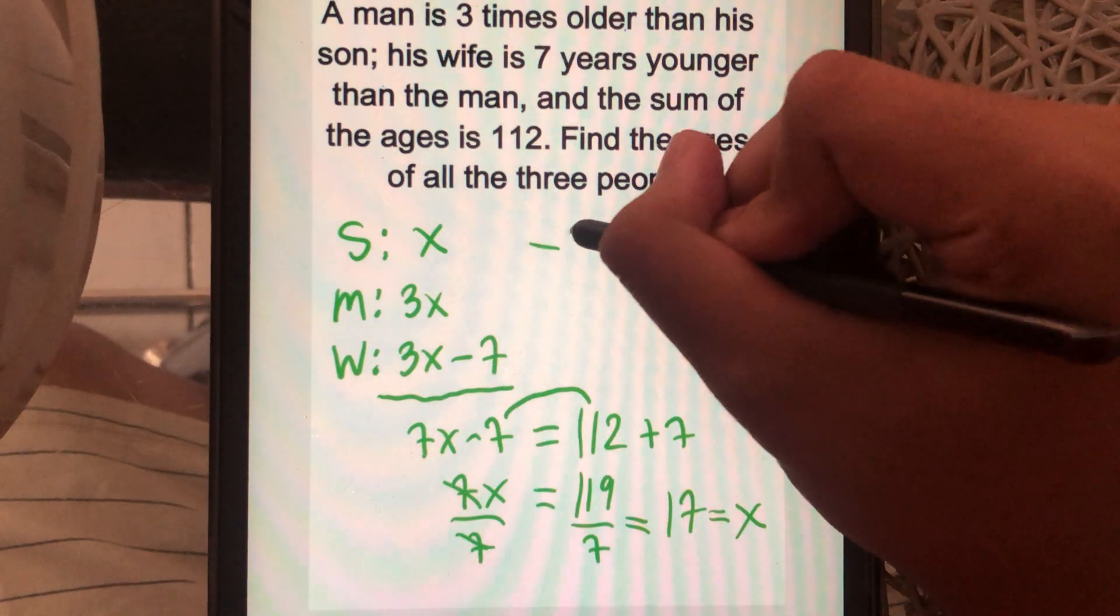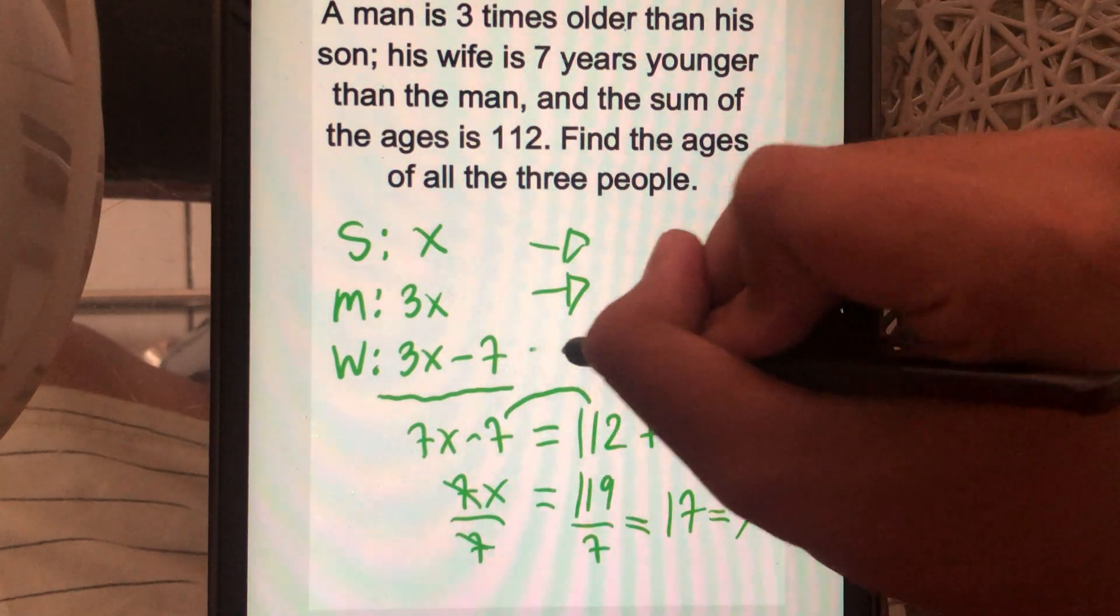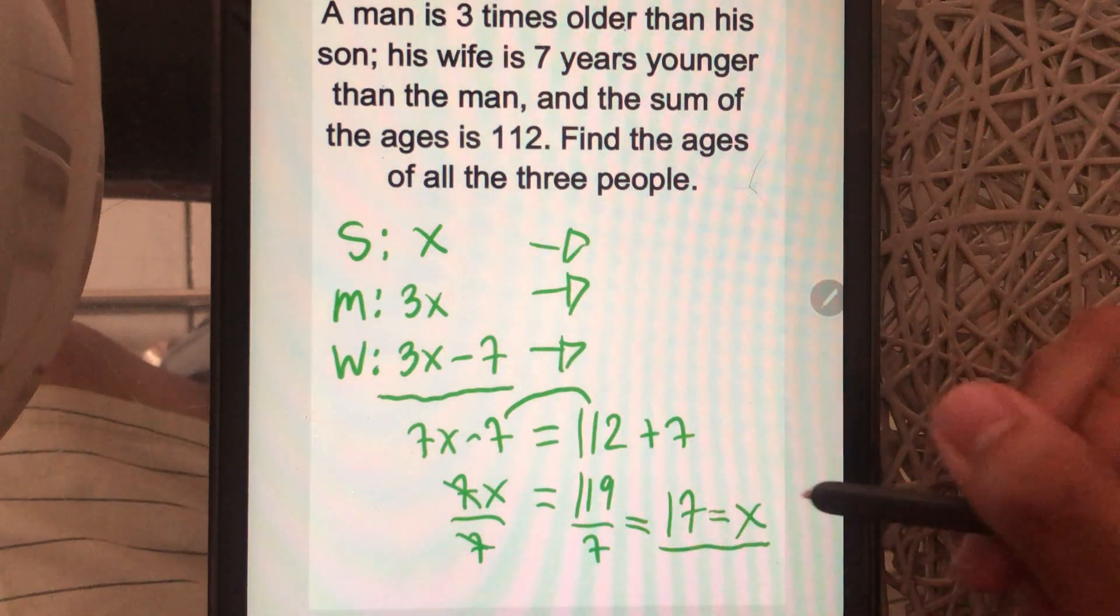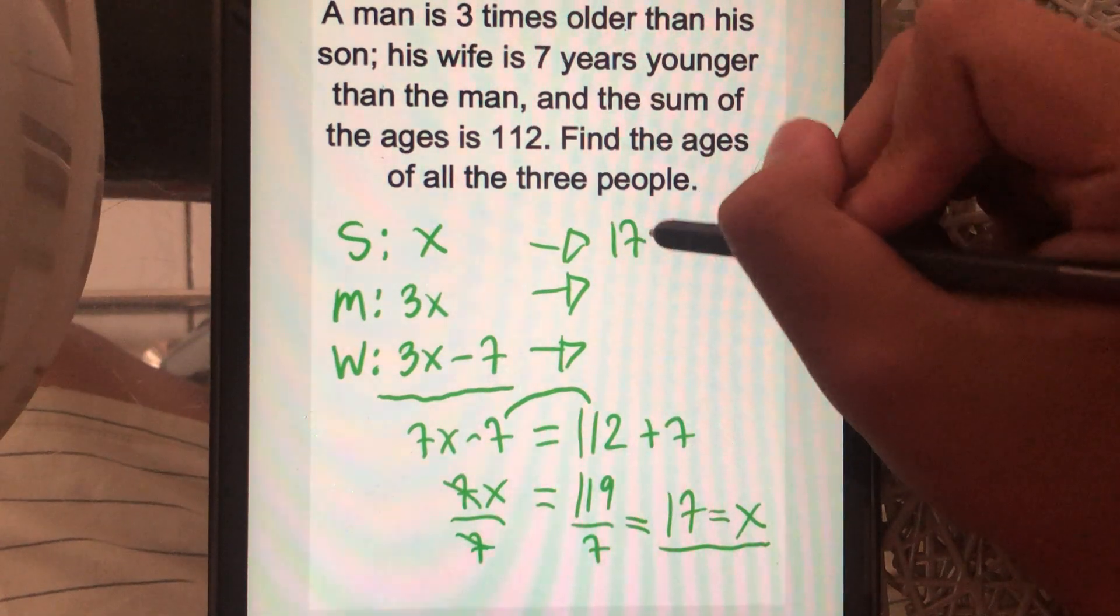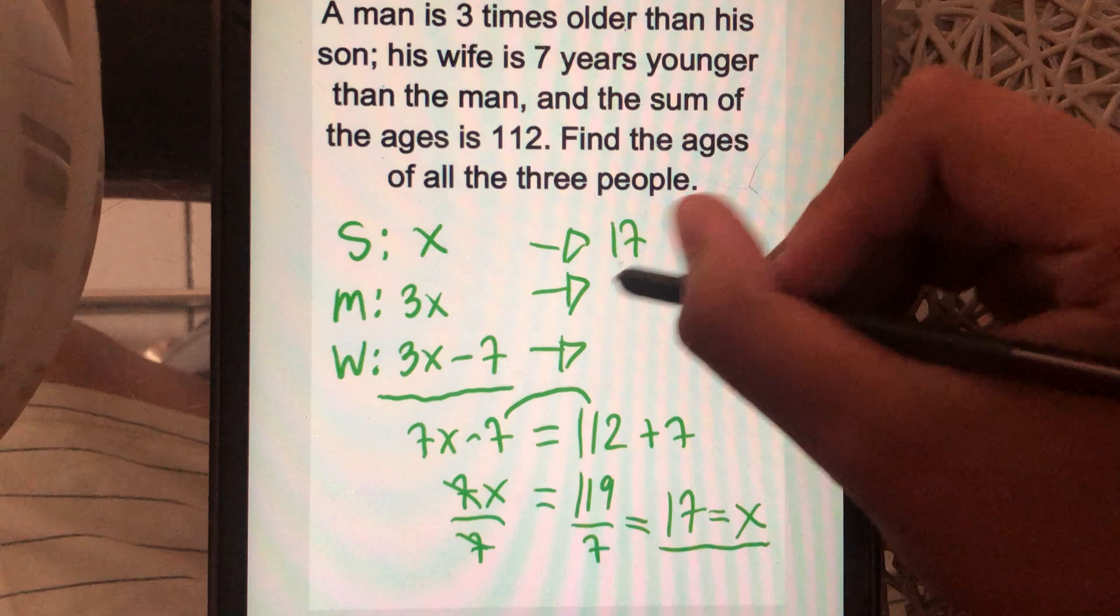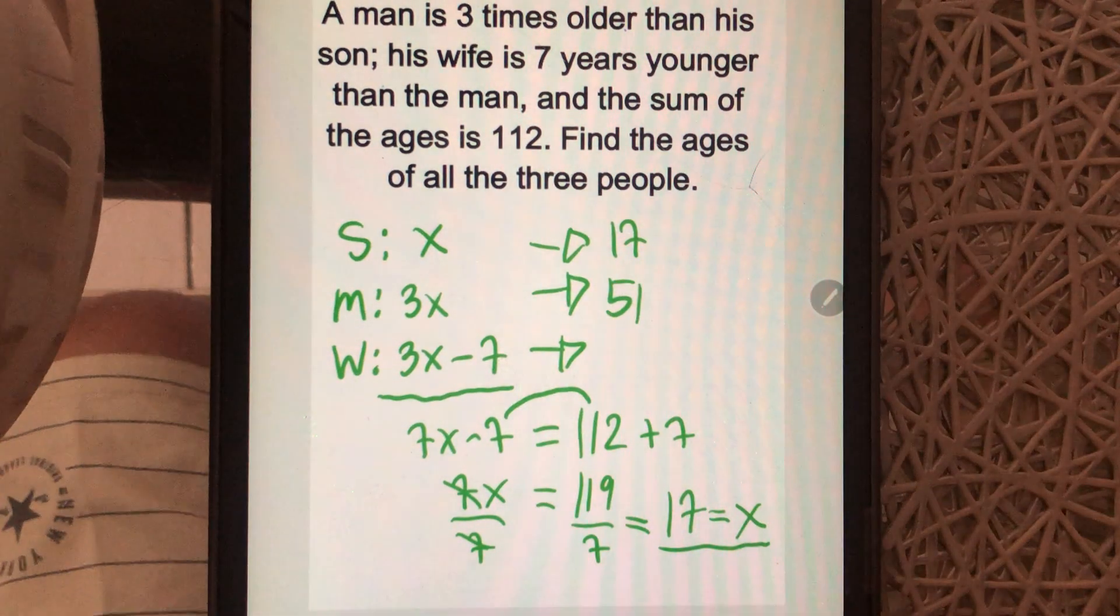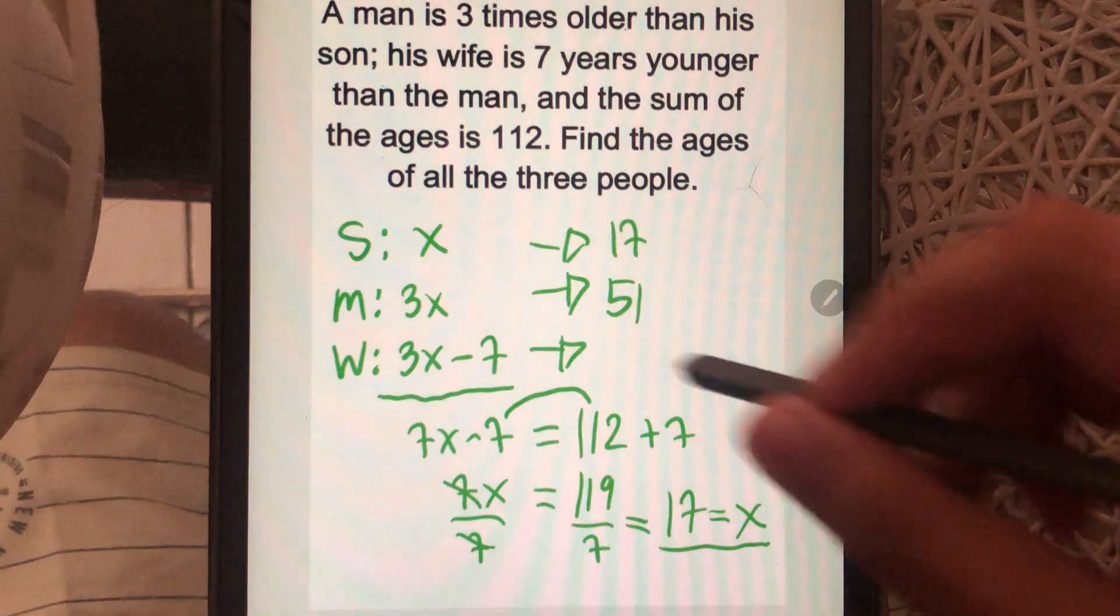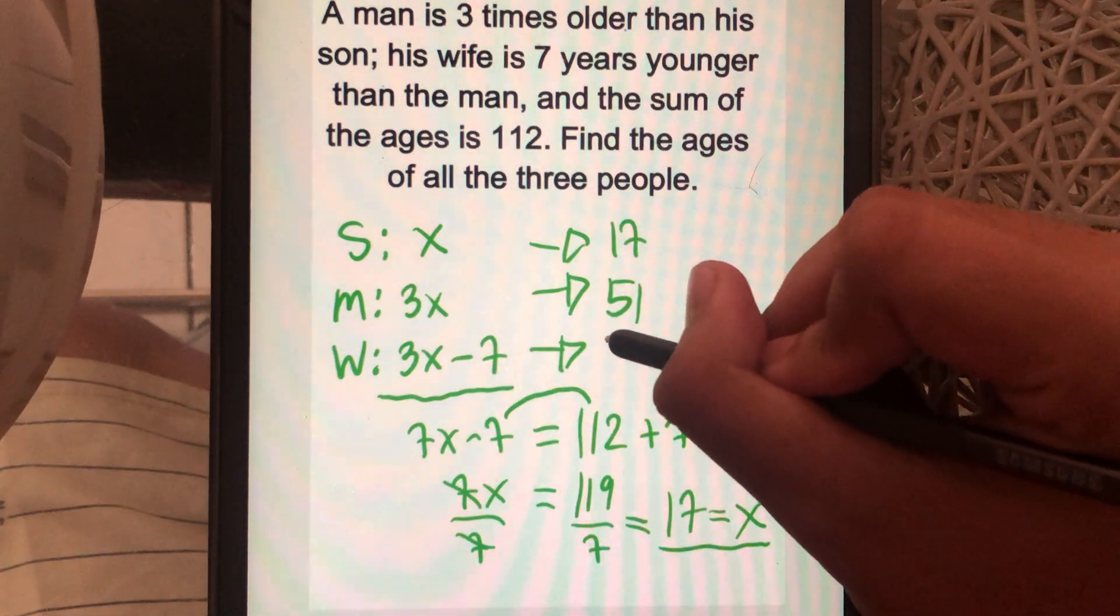Last thing to do, find the age of all the three. And we know that X is equal to 17. So the son's age is 17. The man's age is 51, because 17 times 3 is 51. And then the wife's age, 51 is 3X, 51 minus 7, you get 44.